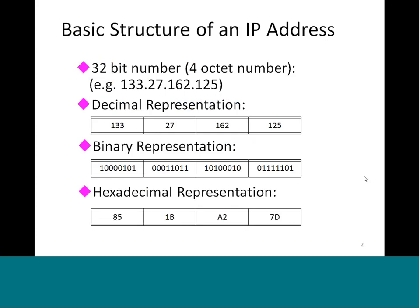This is what is called the decimal representation. You can also represent it in binary, as shown here — each octet gets its own binary equivalent. Sometimes it is also represented in hexadecimal fashion: 133 in hexadecimal is 85, then 27 becomes 1B, and 162 becomes A2.